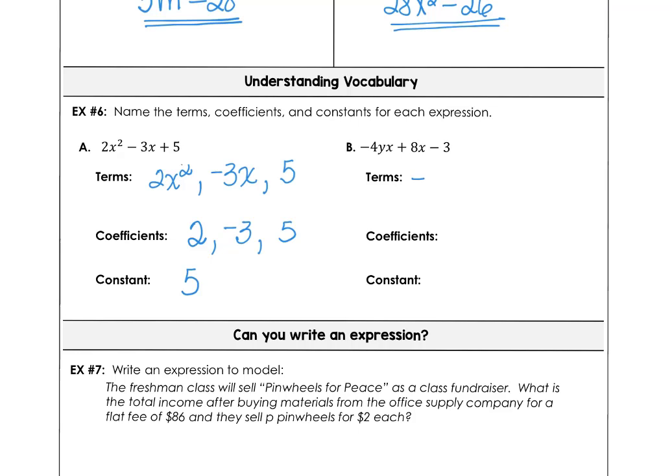So in part B, if you're able to do that one by yourself, your terms are held together by multiplication. Your coefficients are the constant numbers that don't change. And the constant is just the number without the variable or the variable to the 0 power.